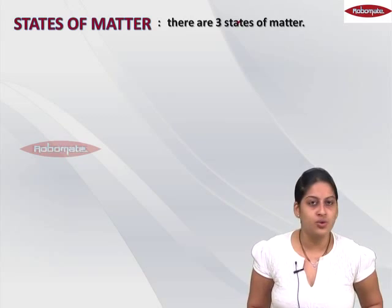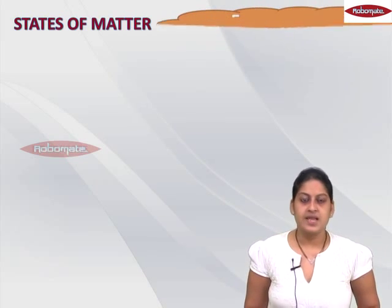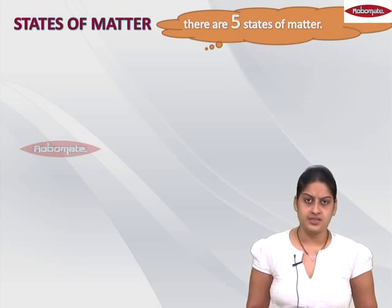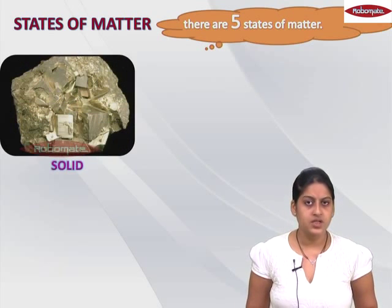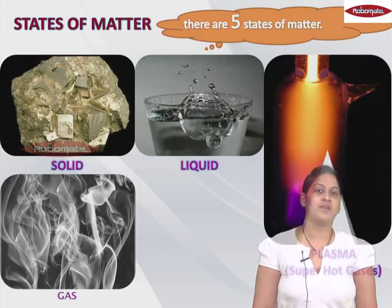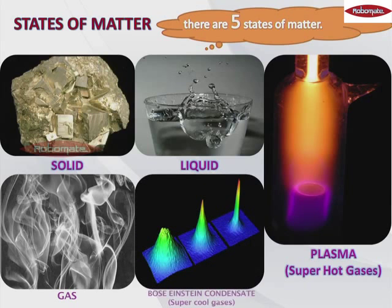But students, from now onwards there are not three states of matter but five states of matter. Let us list them down. The first three states — many of you know — are solids, liquids, and gases. The fourth state of matter is plasma, which is known as the super hot gases. The fifth state of matter is Bose-Einstein condensate, which is known as the super cool gases.